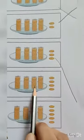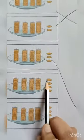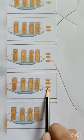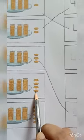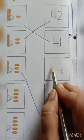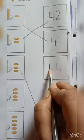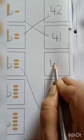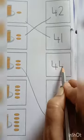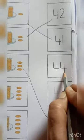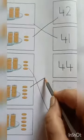10, 20, 30, 40, 41, 42, 43, 44. Where is number 44? Here. First we will say the number and trace it. 4, 4, 44, and then I will match it with the correct box.